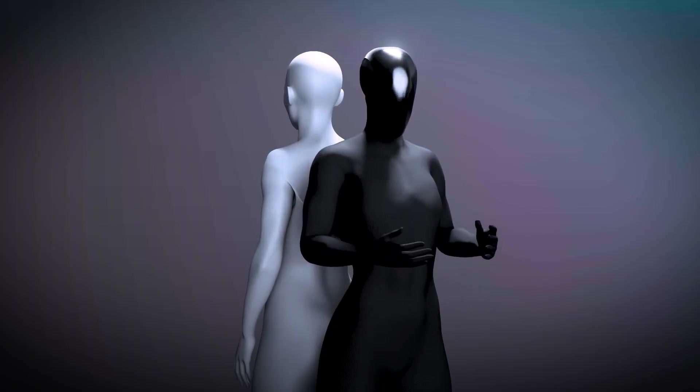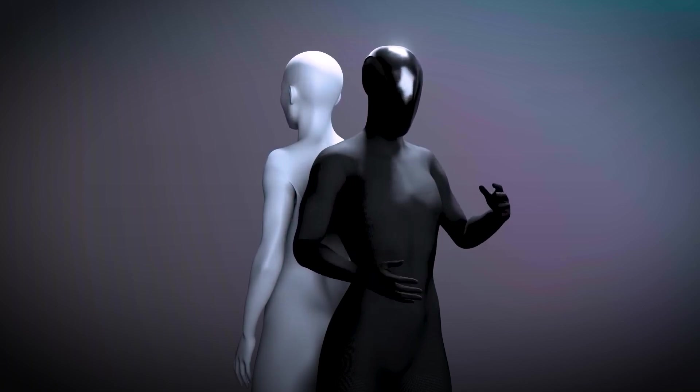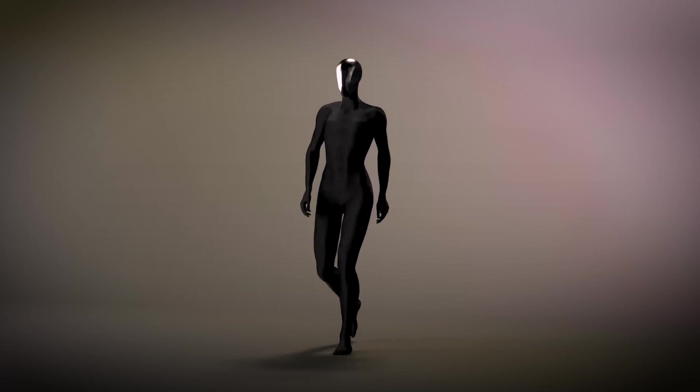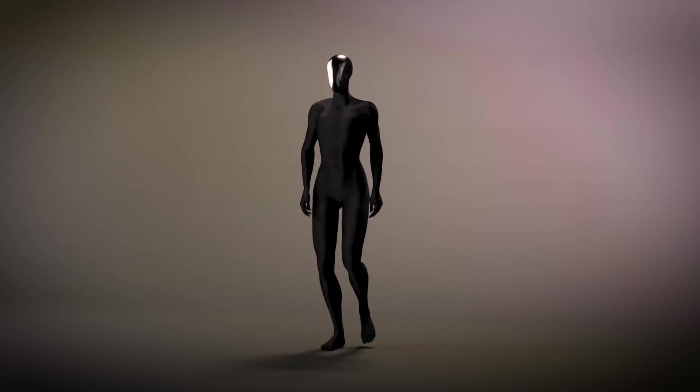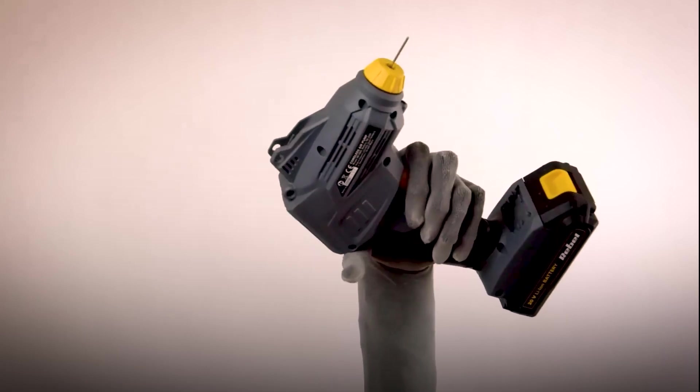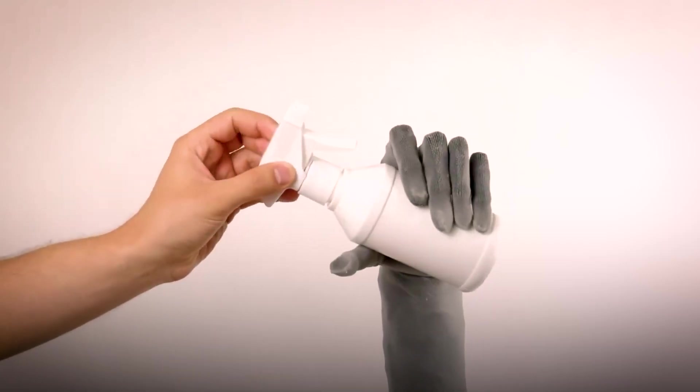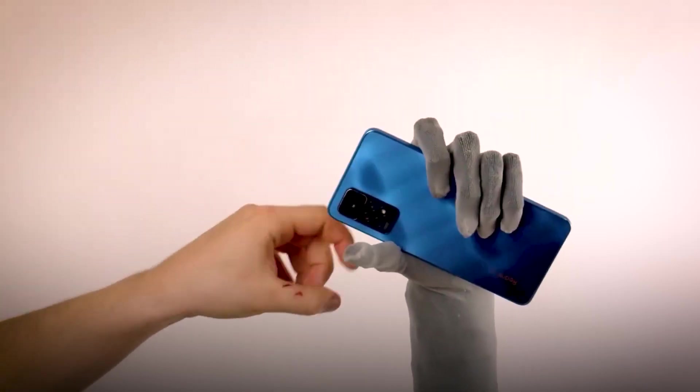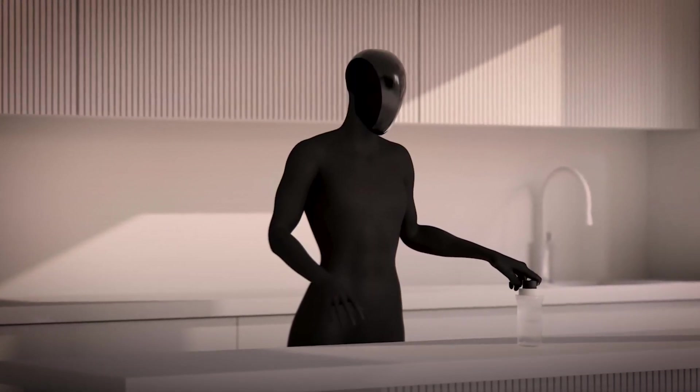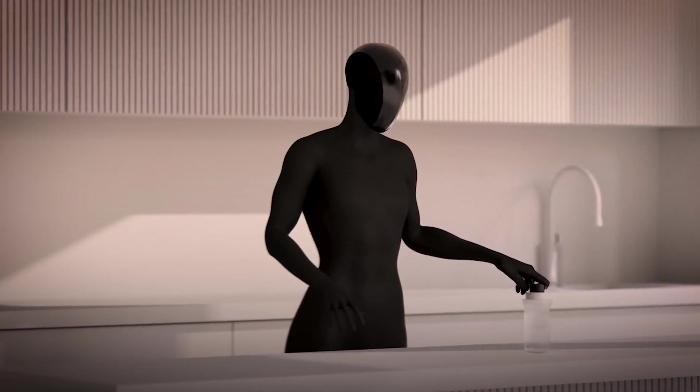And thanks to Jetson Thor's AI muscle, clone alpha can process visual feedback to identify objects, understand environments, and learn from observation. Yes, learn. Like watching you fold laundry once and then doing it better, faster, and without passive-aggressively sighing. That's the power of combining hydraulic muscles with silicon smarts.